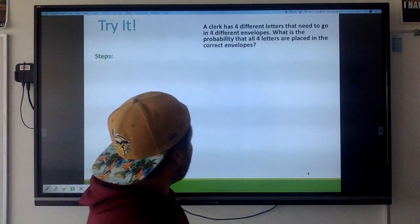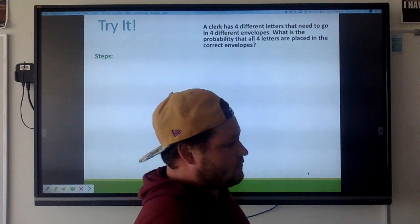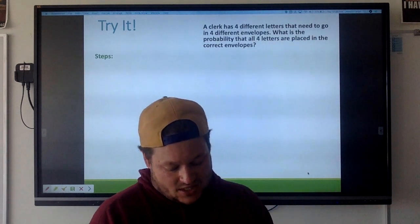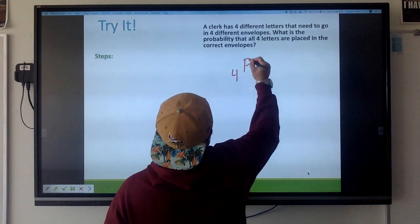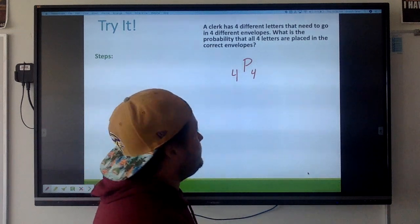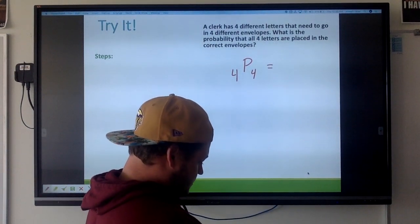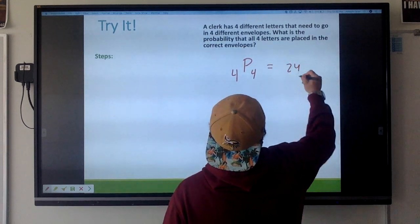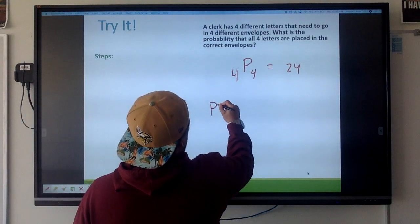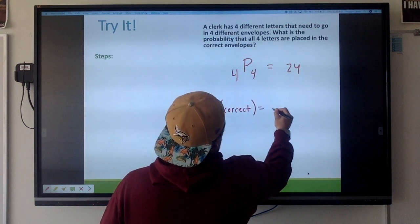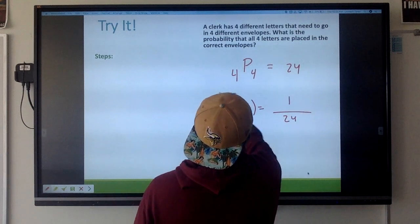Here's another one. If you want to pause the video and try it on your own, go for it. A clerk has four different letters that need to go in four different envelopes. What is the probability that all four letters are placed in the correct envelopes? Well this looks like a permutation to me because each letter needs to go in its specific envelope. Looks like we have four different letters to choose from, we said it's a permutation, we're selecting all four at a time, they all need to be in the right spot. So let's go ahead and put that into our calculator: 4 math prb nPr, I'm getting 24 different ways to do this. So what is the probability that all four letters are placed in the correct envelopes? Well there's 24 different ways to do this, how many ways is the correct way? Well obviously there's only going to be one correct way to do this, so your answer would just be one over 24.